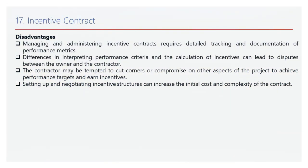Incentive contracts can drive performance and efficiency, but they also come with disadvantages. Complex management: managing incentive contracts requires detailed tracking and documentation of performance metrics, adding administrative complexity. Potential for disputes: differences in interpreting performance criteria and calculating incentives can lead to disputes, affecting timelines and relationships. Risk of cutting corners: the contractor may be tempted to cut corners to achieve performance targets and earn incentives, which could impact overall project quality. Higher initial cost and complexity: setting up incentive structures can increase the initial cost and complexity of the contract.